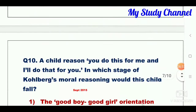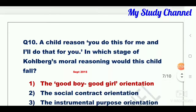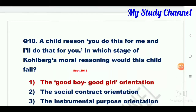Question number ten: a child reasons 'you do this for me and I will do that for you.' In which stage of Kohlberg's moral reasoning would this child fall? The right answer is option one — the good boy, good girl orientation.